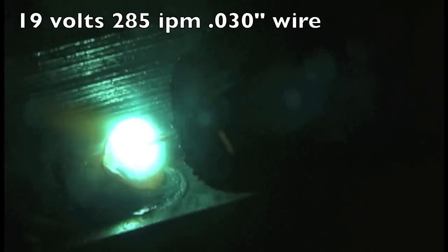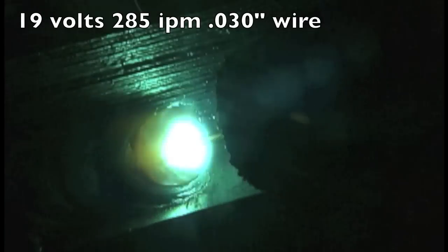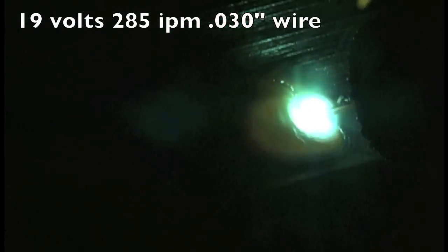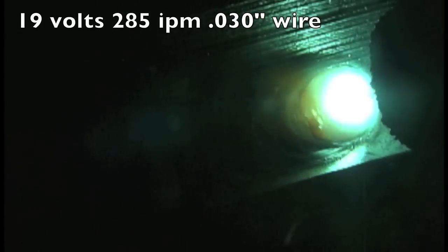Now this is kind of my go-to method here. You can change how the ripples appear by how big of a loop you make. I'm just kind of making a series of U's here. And again, not quite as hot as I would normally weld.